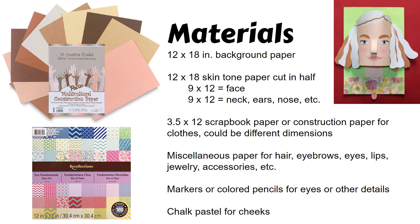And miscellaneous paper for hair, eyebrows, eyes, lips, jewelry, accessories, etc. You can see in my example that the hair is separate pieces of paper, the eyebrows are different pieces of paper, both of the eyes, the nose, the lips are all different pieces of paper that are glued on to the face. I did give myself a necklace with a jewel on it and I used marker to put the facets on the jewel. Markers or colored pencils for the eyes or other details, chalk pastel for the cheeks — you can see on my project that I did put pink on my cheeks and a little bit of pink on my chin.